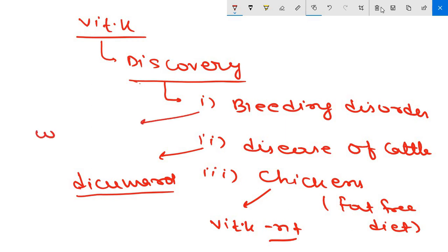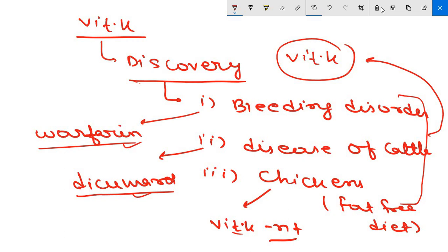They were given warfarin, which will inhibit the carboxylation of some factors, clotting factors. It is 2, 7, 9 and 10. So bleeding was continued and clotting was not at the proper time due to the warfarin. And if these three all given vitamin K from external, vitamin K is given externally, then all the three comes to normal. So this investigation led to the discovery of vitamin K.